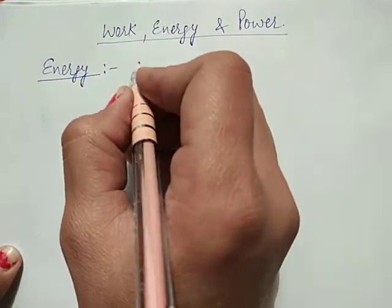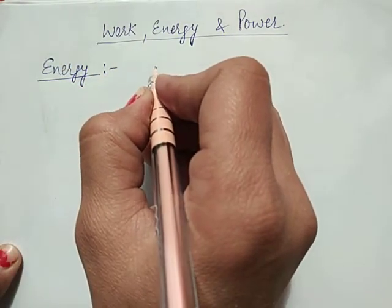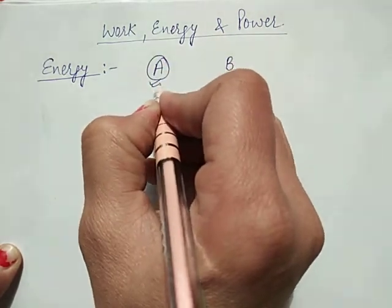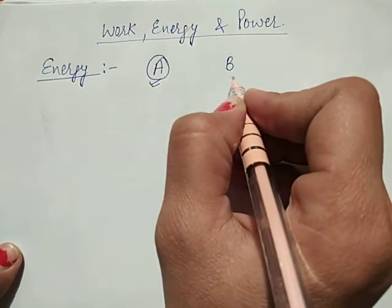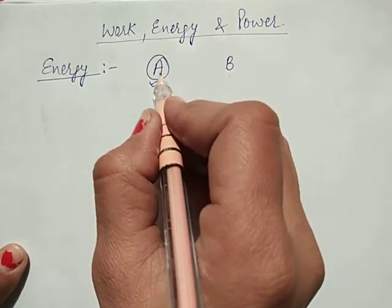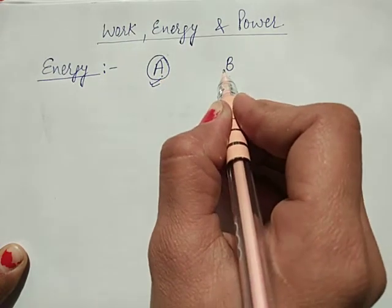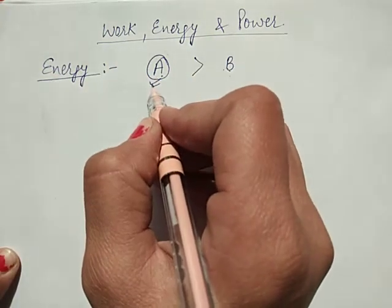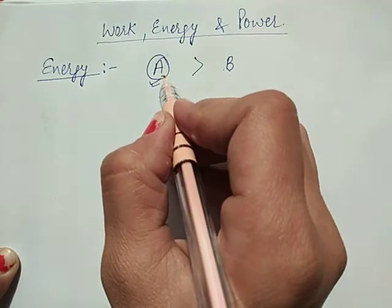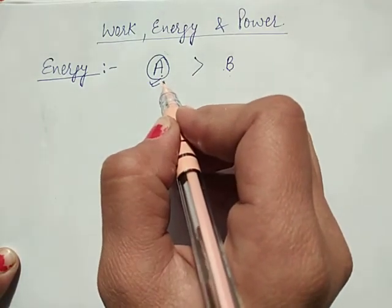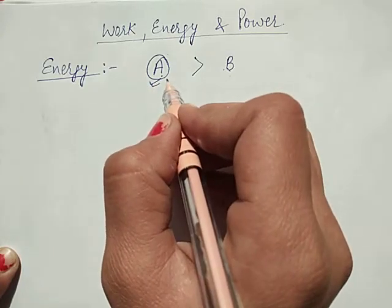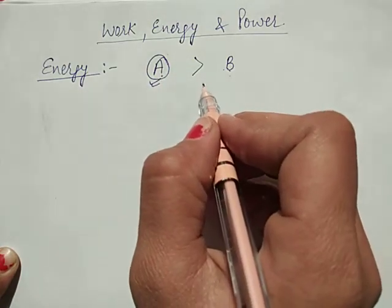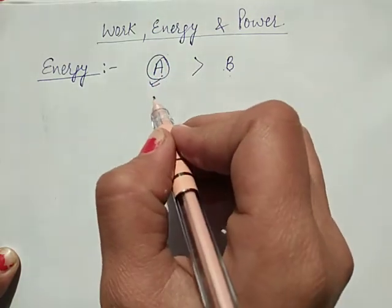Energy means — suppose one person is energetic. This is person A, this is person B. Person A is more energetic as compared to person B. It means we can say that person A can do more work as compared to person B. In the same way, a person after doing a lot of work gets tired, and after that he is not able to do much work. So we can say that a person doing work expends something.